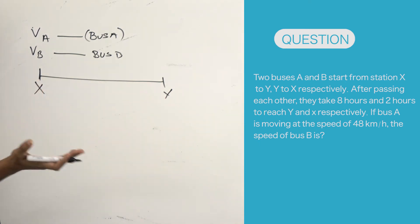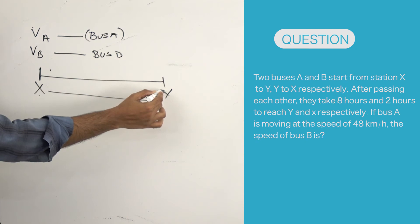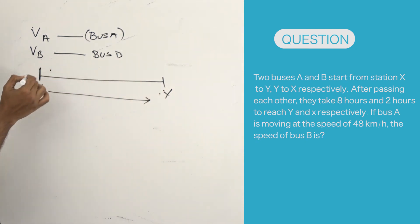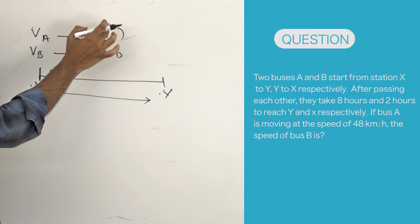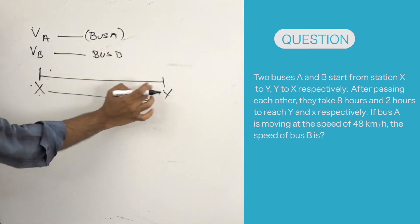But what he's saying is they started simultaneously—bus A is traveling to point Y and bus B is traveling to point X. Because they started simultaneously, at some point they meet. Let's say if the speed of bus A is higher, they will meet closer to Y.